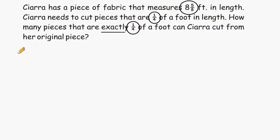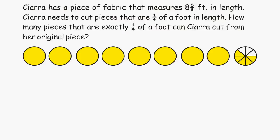To solve this problem, we are going to create circles to represent each foot of the fabric that Ciarra has. So we're going to say that this first circle represents one foot and this is two feet and so on. And we have eight whole feet here and five-eighths of another whole. So altogether this is our 8 5/8 of a foot.